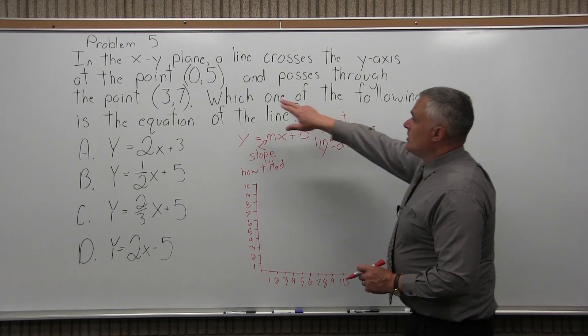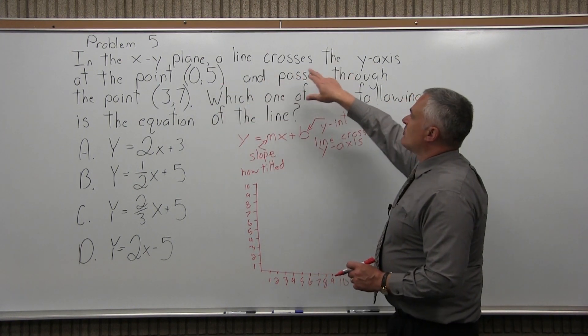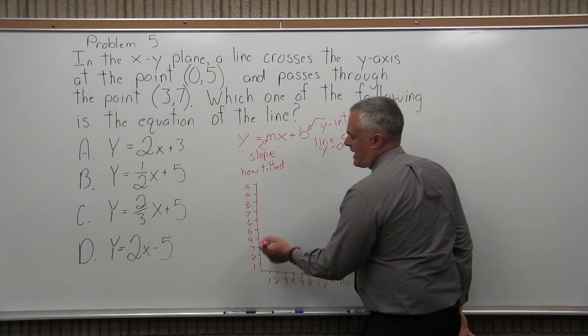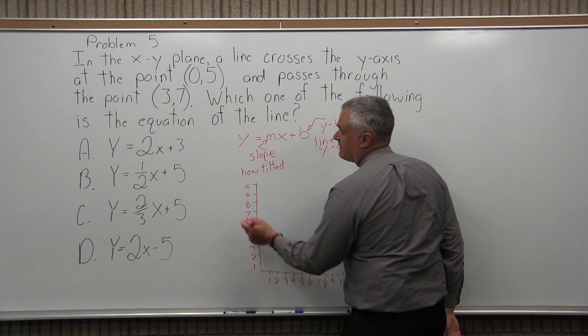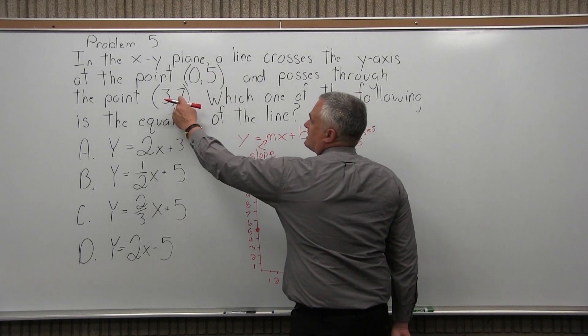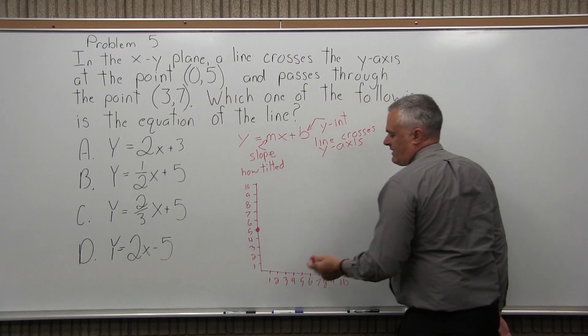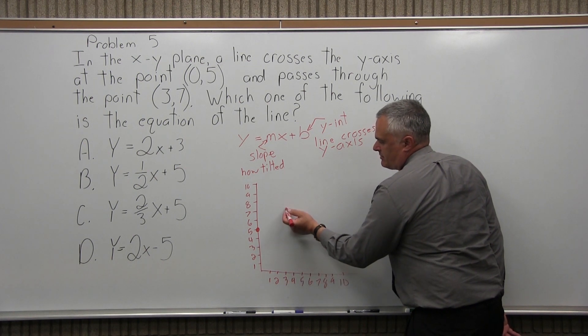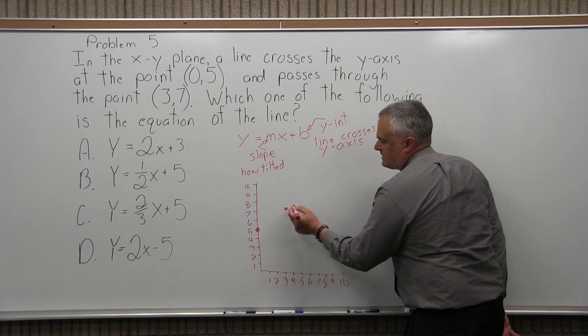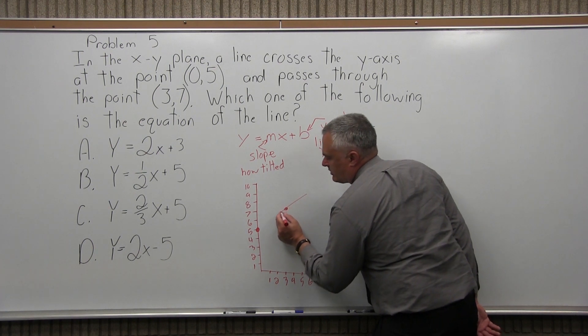So the problem explains that the line crosses the y-axis at the point (0,5). So that's over 0, up 5. There's the point (0,5). And it says it also passes through the point (3,7). So the point (3,7) means over 3 and up 7. So that's what our line looks like.